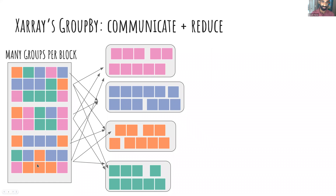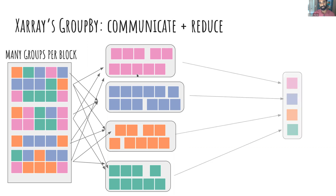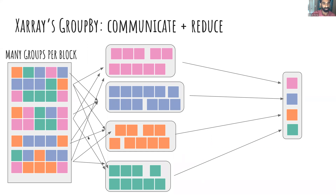To understand why it's so bad, you need to understand how xarray does things. Here's a schematic with many groups per block. What xarray does is essentially a shuffle: it finds all the pink squares, pulls them out, creates a new array, then finds all the blue squares, and repeats. You end up with arrays containing all observations per group, then you can sum or take the mean — but that first step of communicating everything everywhere is a big problem.